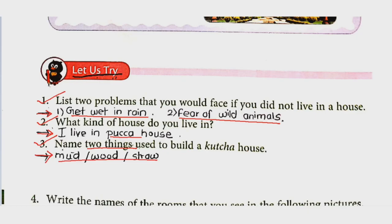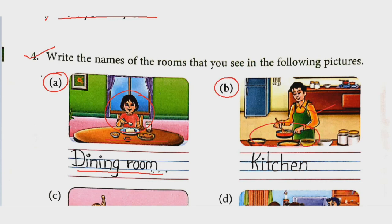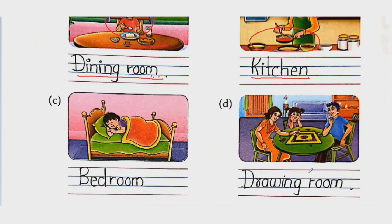See question number four: write the names of the rooms that you see in the following pictures. Yahaan pe kya karte hain? Kitchen mein karte hain — so this is a kitchen. See the third picture — yahan pe ek bed hai aur koi so raha hai, so this must be a bedroom. And look at the last one — yahaan pe kya kar rahe hain? Khel rahe hain, saare family members saath mein baithke khelte hain — woh kaunsi room hoti hai? Drawing room.